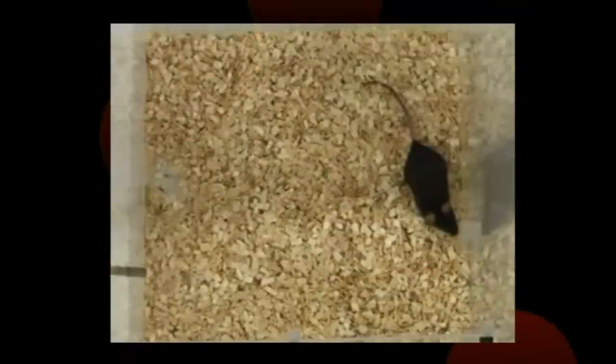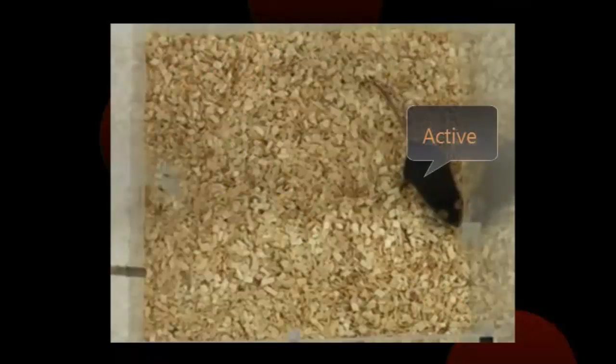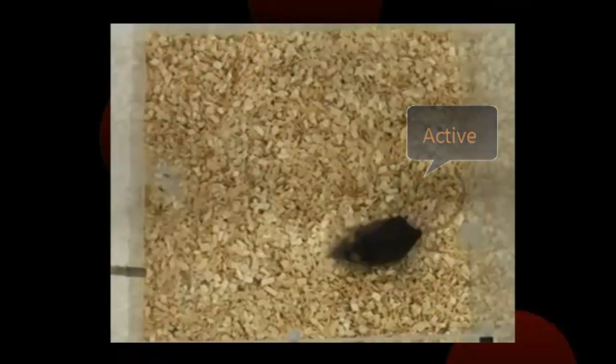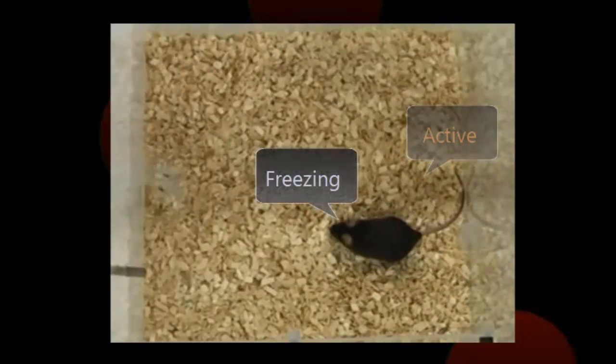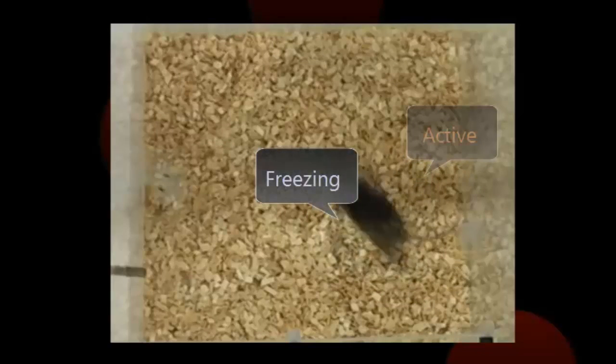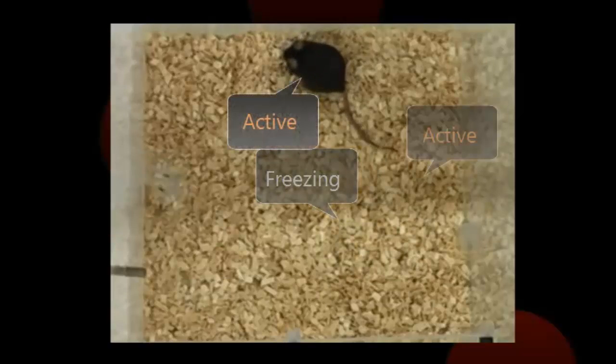With activity analysis you can quantify the level of activity of the animal. You can use this function when the mobility variable doesn't give the expected results. The reason is that mobility is based on the change in the subject surface area. When proper detection of the subject area is problematic, mobility may give unreliable results.